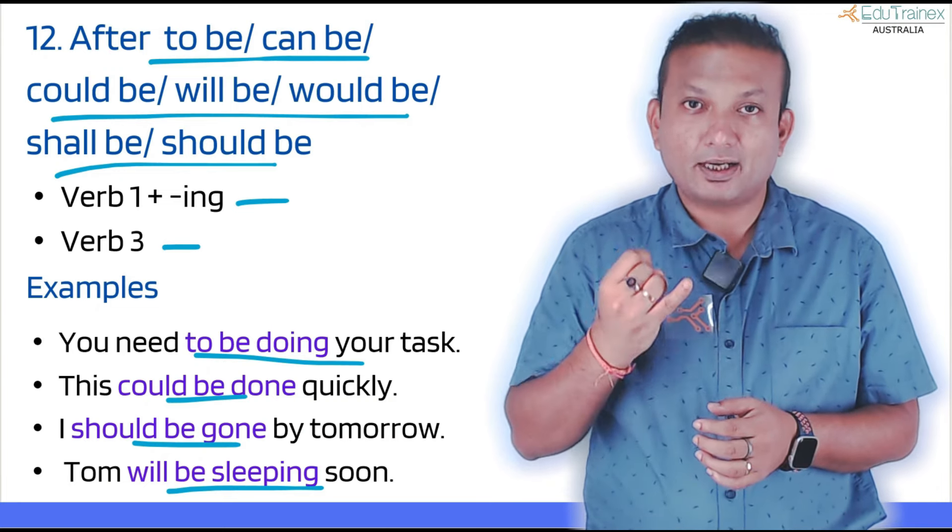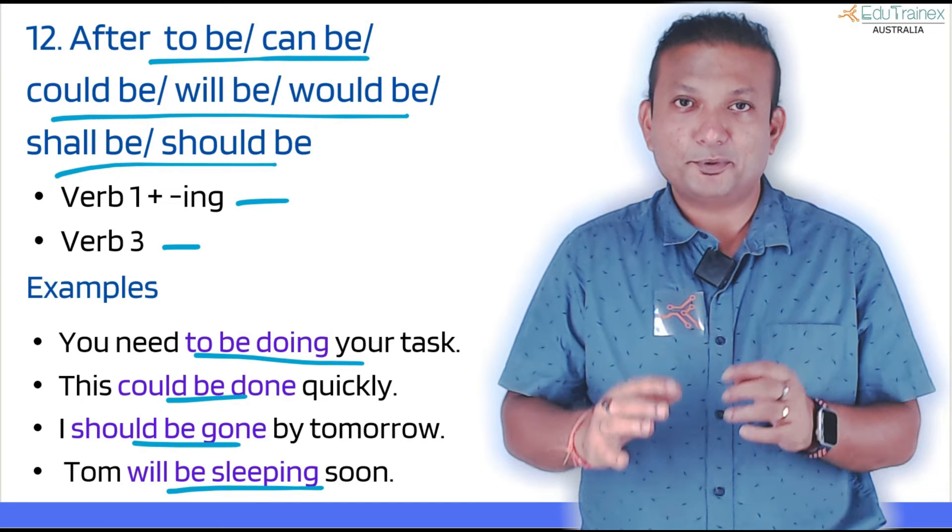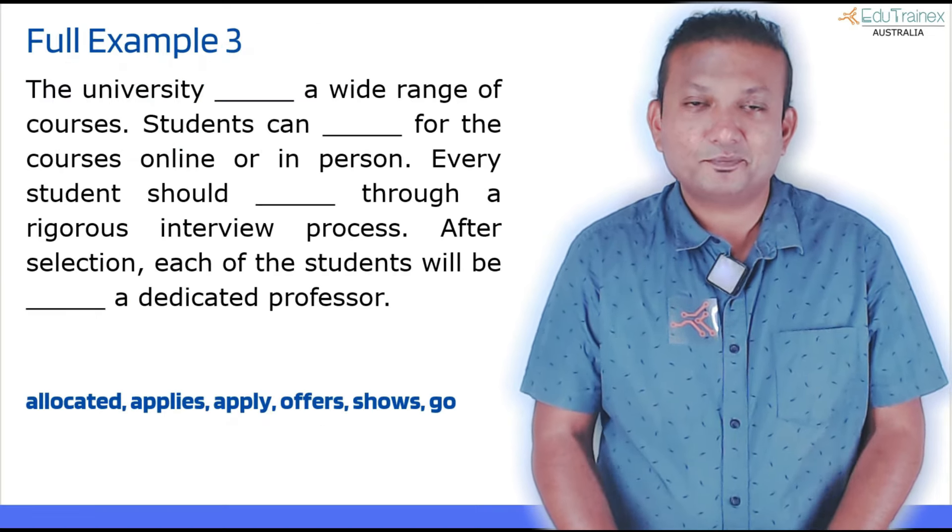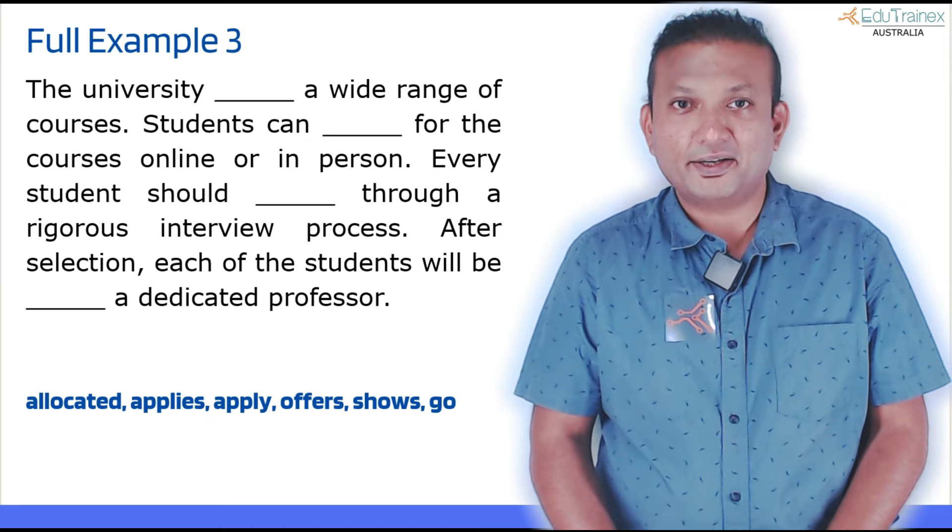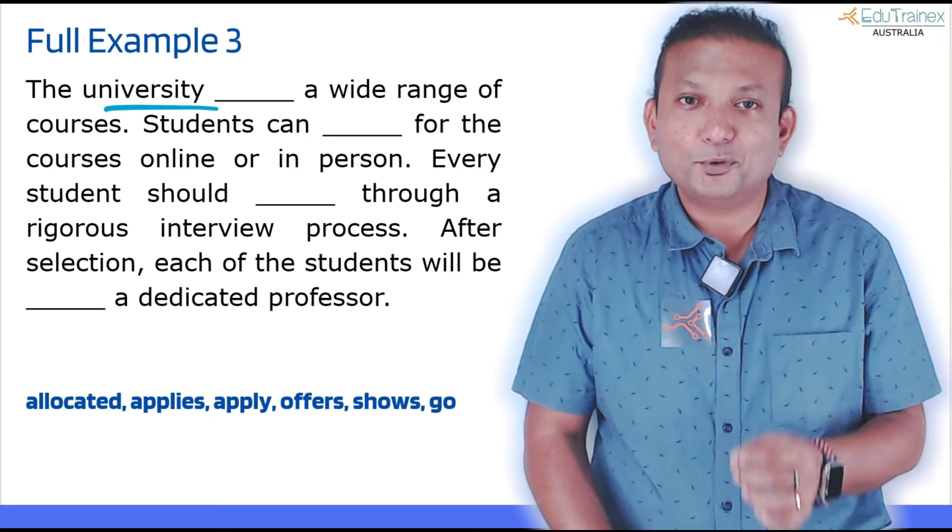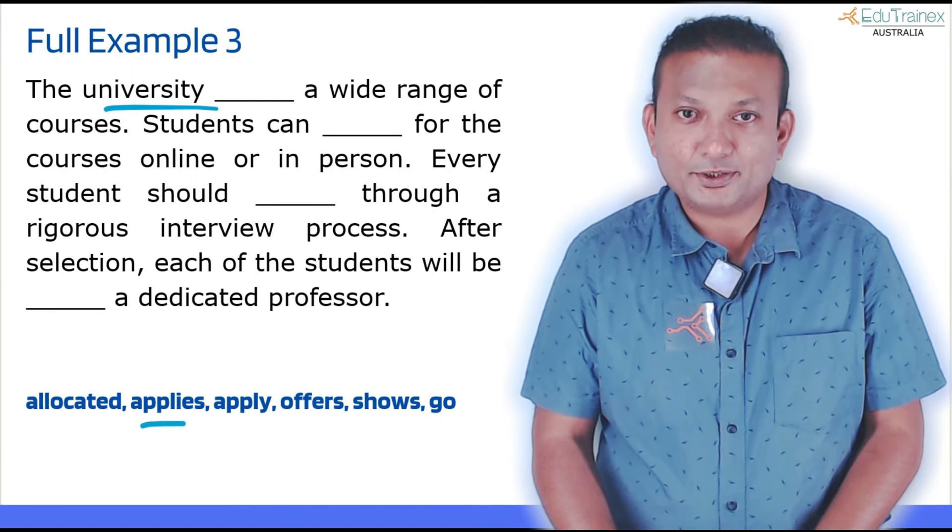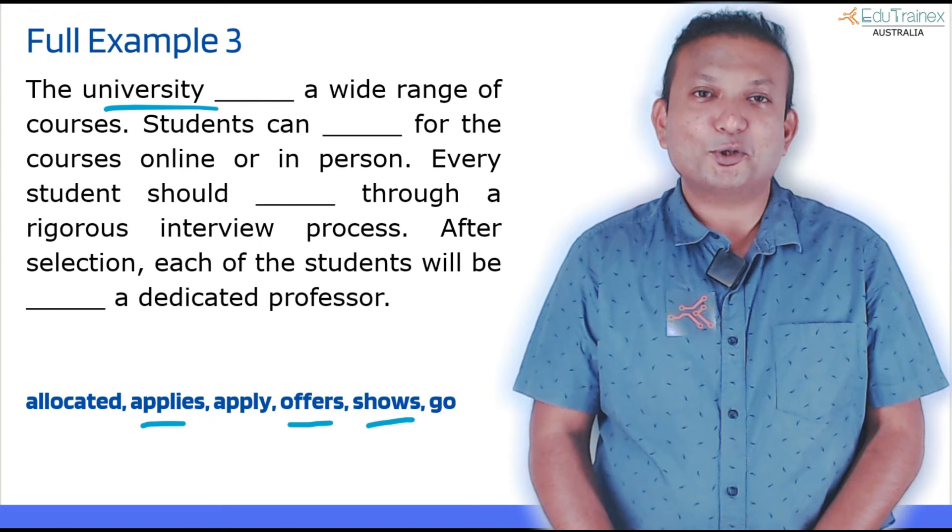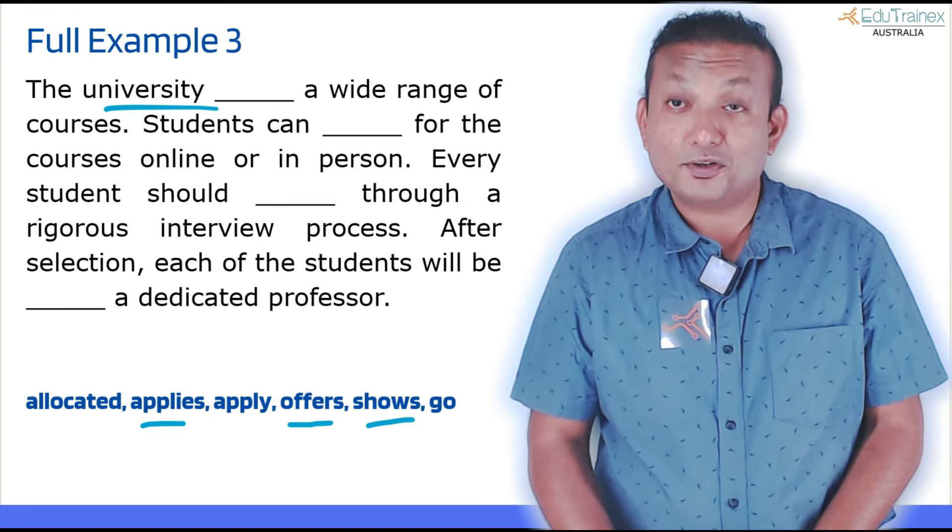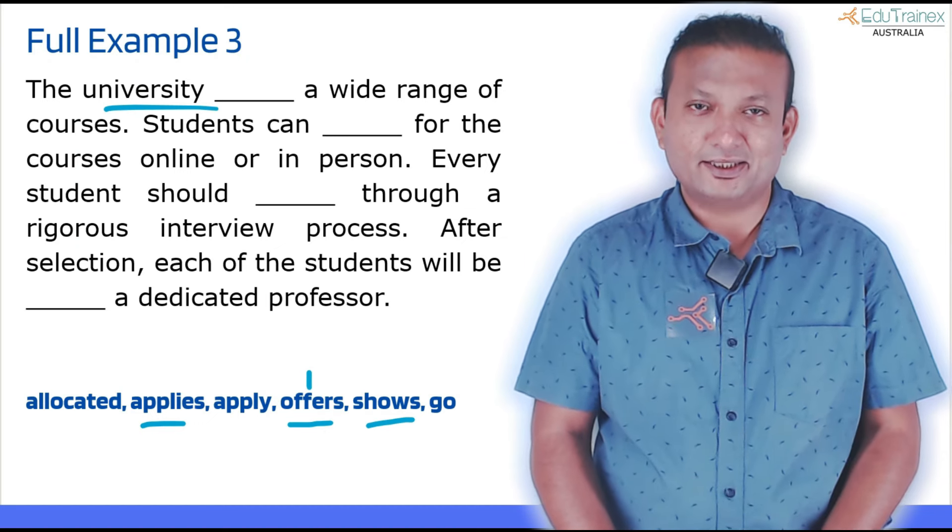Time to use the examples to learn the techniques further. See the example here: 'The university blank a wide range of courses.' University is what? Singular noun. So what will come? A plural verb. Let's find a plural verb here. I can see 'applies,' I can see 'offers,' I can see 'shows.' Now time to use the context. 'University applies a wide range of courses' doesn't make sense here. 'Offers a wide range of courses,' yes. 'Shows a wide range of courses' doesn't make sense.